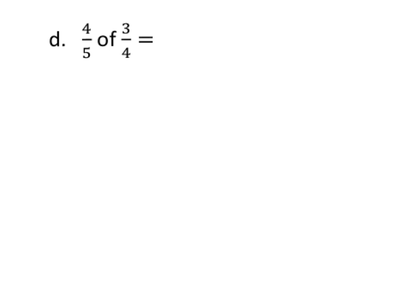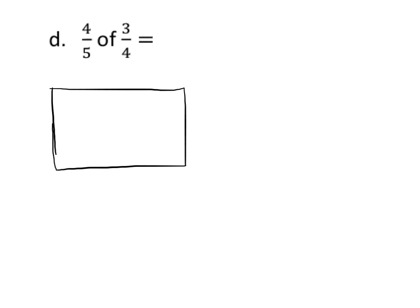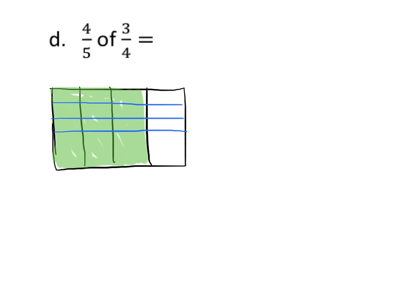So let's practice another one here. We've got 4 fifths of 3 fourths. So once again, we're going to draw our whole right here. And then we're going to cut it into fourths because it says 3 fourths. Now we're going to shade in 3 fourths. So now that we've got 3 fourths shaded in, now we're going to do 4 fifths of 3 fourths. So that means we are going to cut horizontally into 5 pieces — fifths. And we want 4 fifths. So here's our 3 fourths, and we want 4 fifths of that.